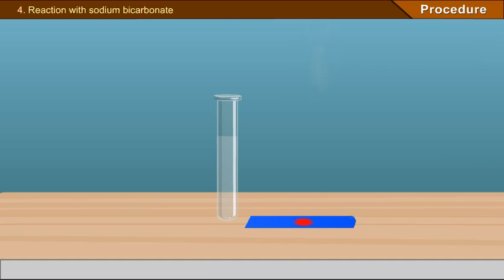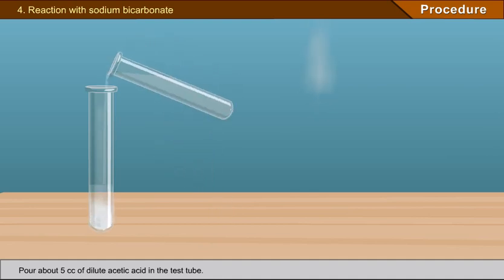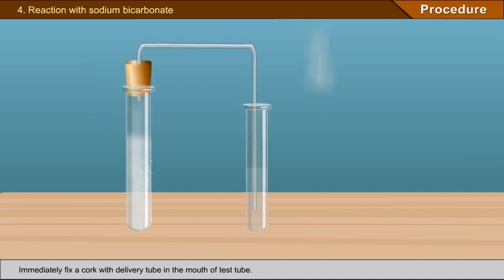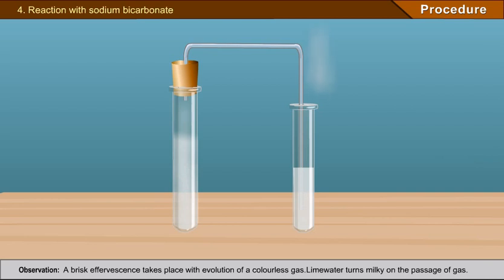Experiment 4 - Reaction with sodium bicarbonate: In a clean test tube, put a pinch of sodium bicarbonate. Pour about 5 cc of dilute acetic acid in the test tube. Immediately fix a cork with delivery tube in the mouth of the test tube. On the other end of the delivery tube, place lime water contained in another test tube. Observation: a brisk effervescence takes place with evolution of a colorless gas. Sodium bicarbonate reacts with acetic acid to liberate carbon dioxide gas.